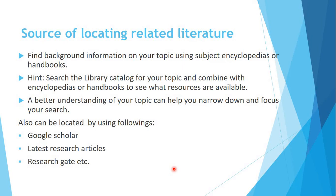Sources of locating related literature: once you decide your topic, you will need background information on it. You can use encyclopedias or handbooks, and library catalogs to find books related to your topic. For better understanding, you can study related materials to narrow down your topic and focus your research. You can also use Google Scholar for latest research articles, and platforms like ResearchGate to find information and review literature.